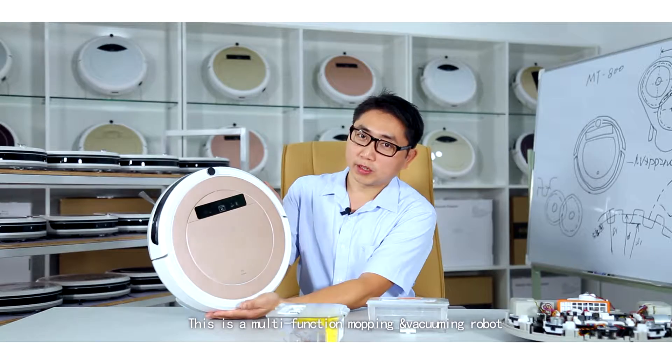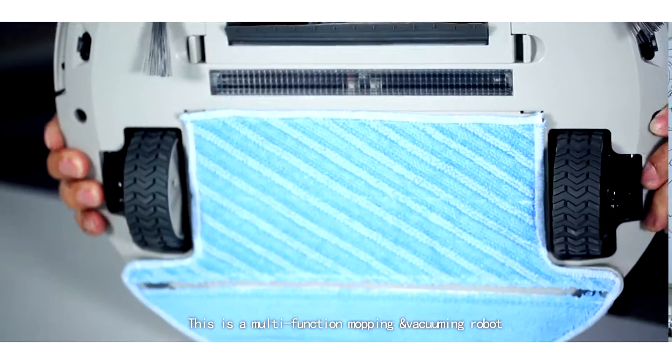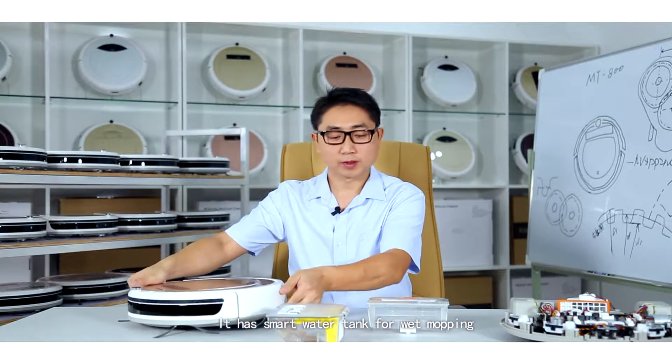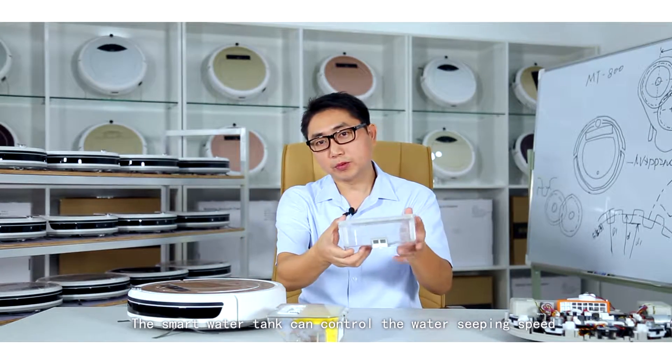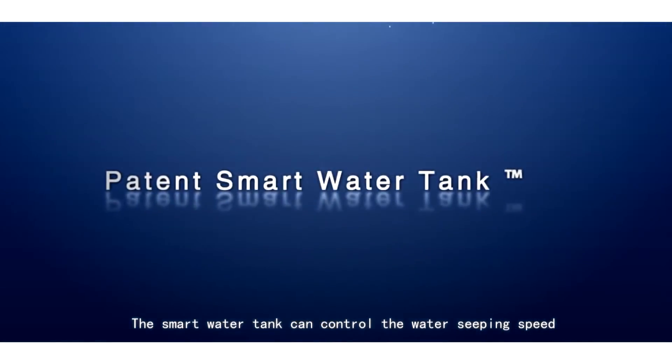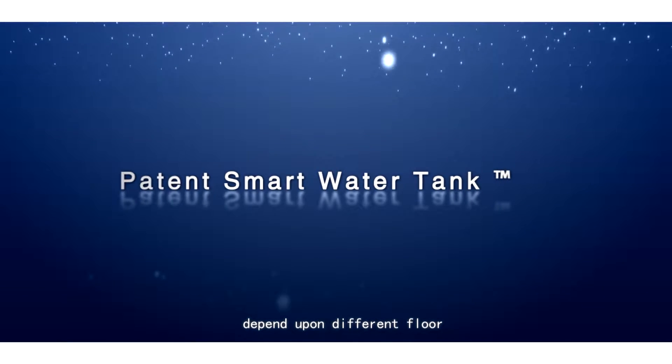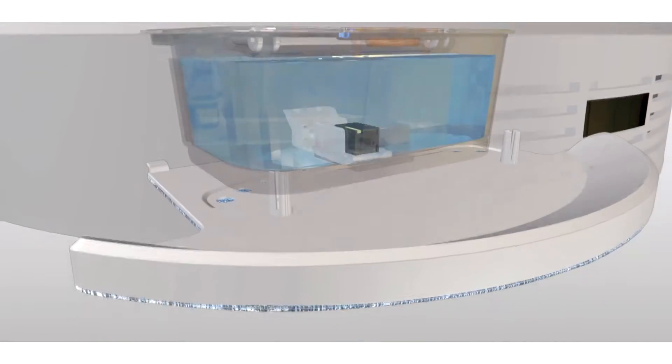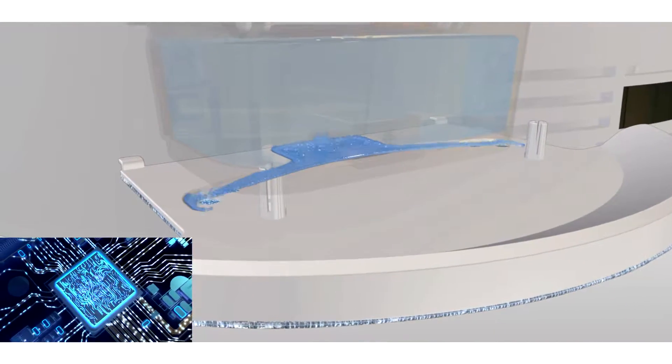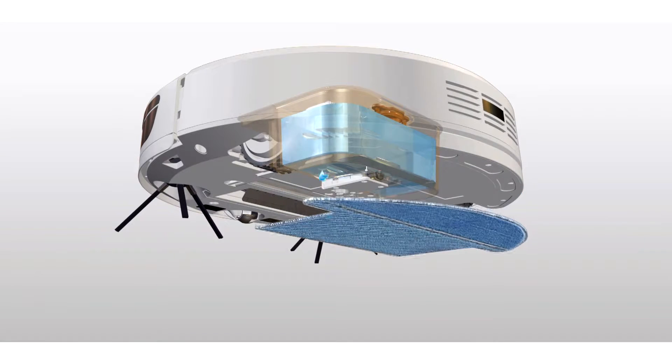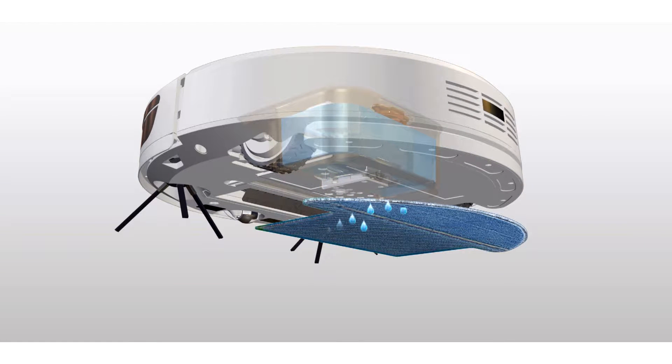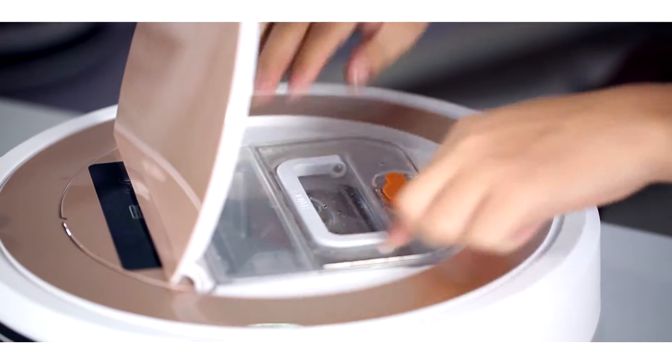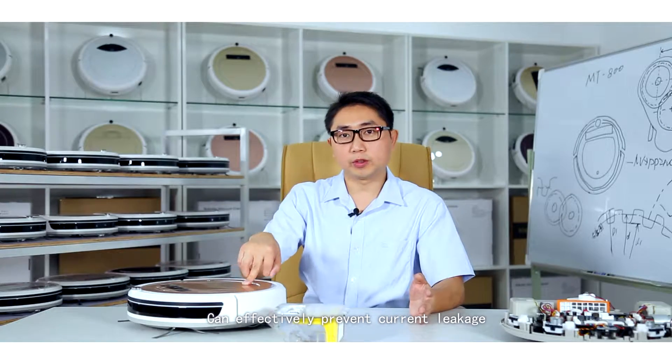This is a multi-function mopping and vacuuming robot. It has a smart water tank for wet mopping. The smart water tank can control the water seeping speed depending upon different floors and can effectively prevent current leakage.